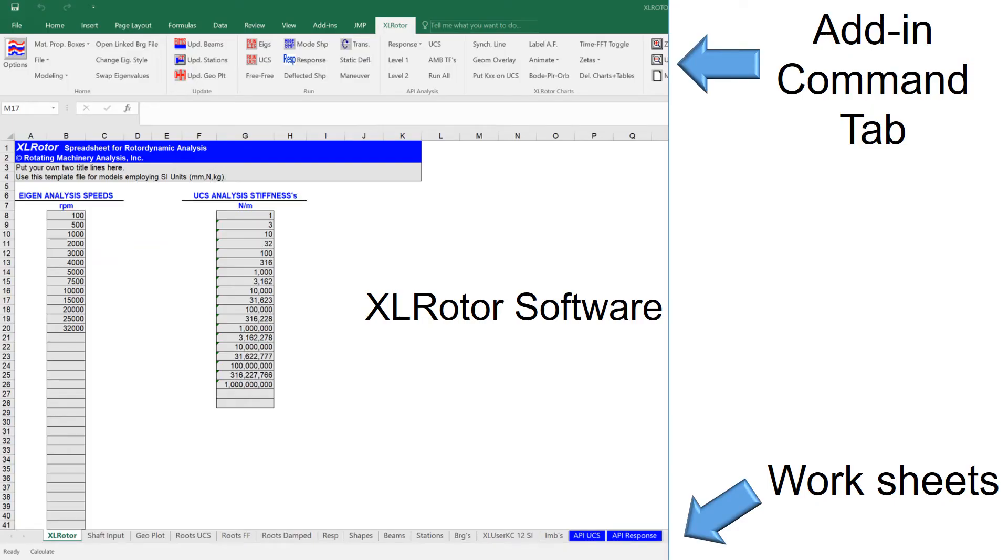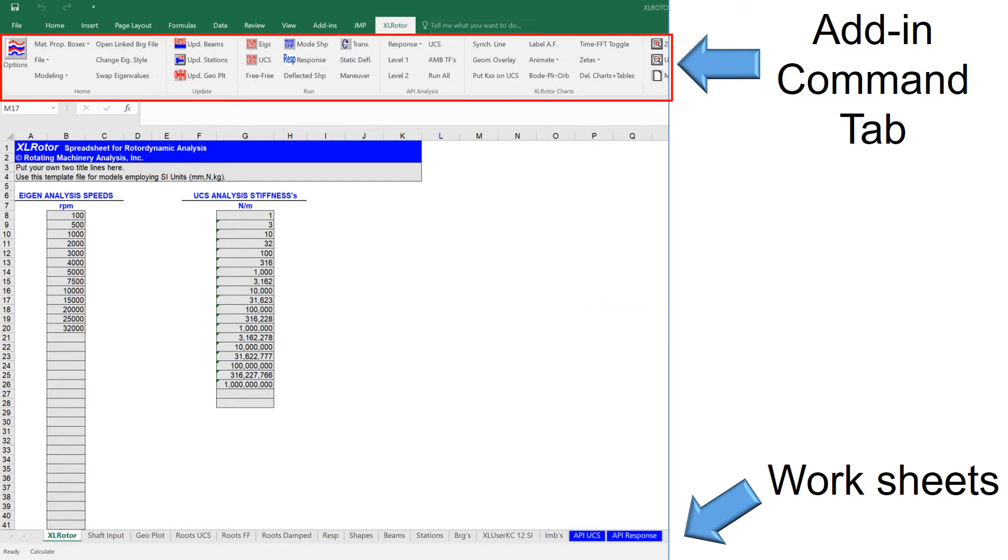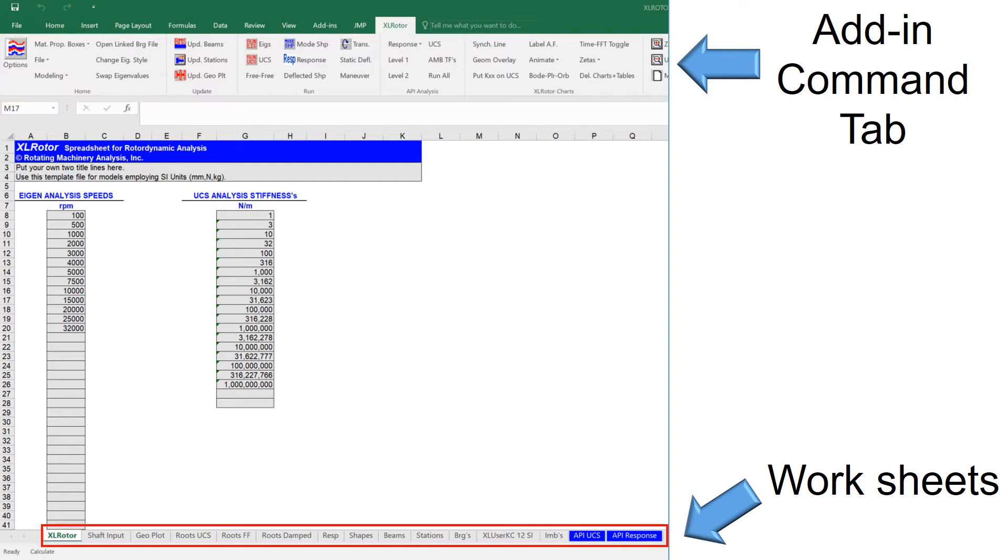Excel Rotor is an Excel based rotor dynamic analysis tool. It uses Microsoft Excel as an interface. When you open Excel Rotor you can see the Excel spreadsheet. Above add-ins is the command tab which gives multiple options to run the software. The bottom worksheets are where the inputs are loaded and outputs are shown.